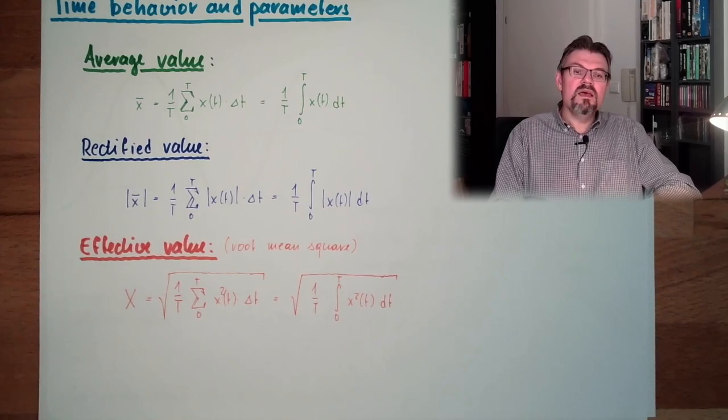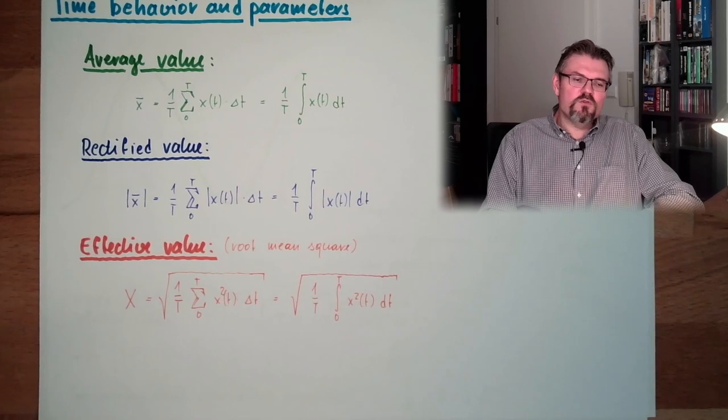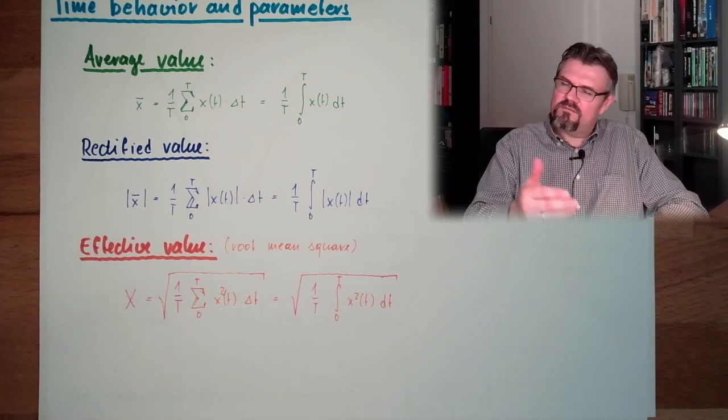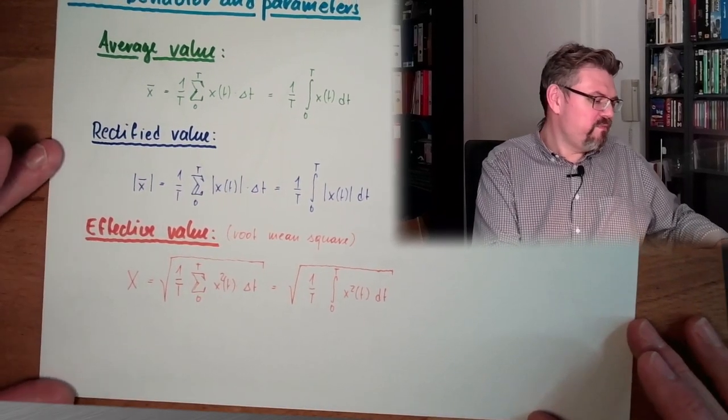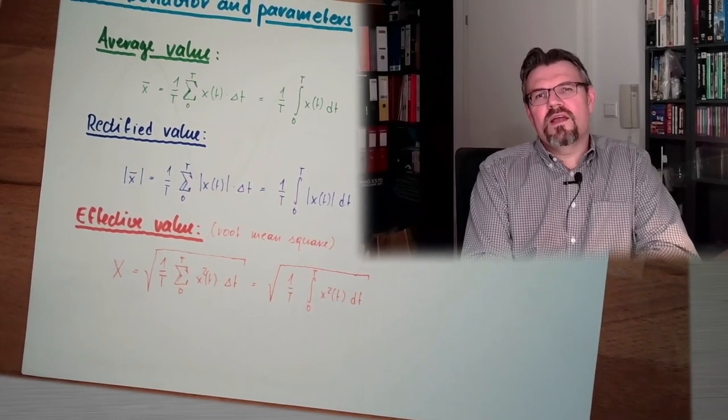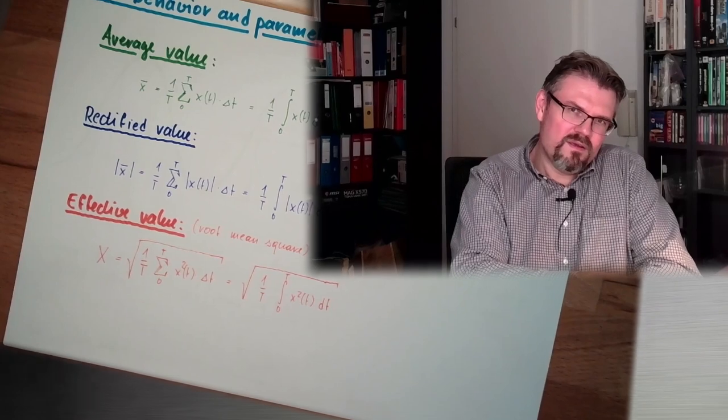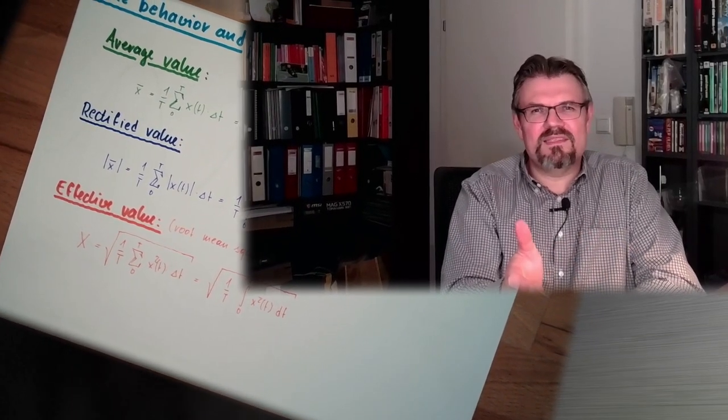So this was the time behavior and parameters of alternating current. If nothing else is mentioned, a stated value is always the effective value of a sine-shaped signal. Since sinusoidal waves are very important to us, next time we will talk about how we can represent a sine wave in a different form — sinusoidal quantities — which makes them easier to handle. Thank you very much for listening. Goodbye.